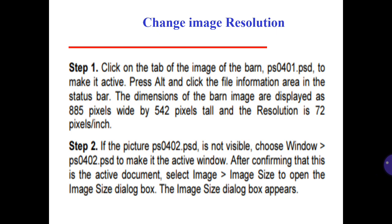Click on the top of the image to make it active. Press Alt and click the File Information layer in the status bar. The dimensions of the image are displayed as 885 pixels wide by 542 pixels tall, and the resolution is 72 pixels per inch.